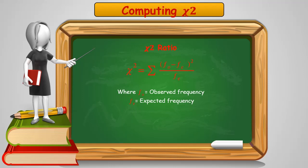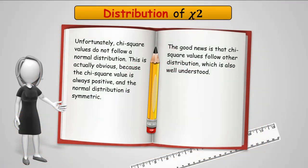Computing the chi-square ratio is actually fairly straightforward. It's taking the difference between the observed frequency and the expected frequency, squaring it, and dividing it by the expected frequency. And that's the whole computation.